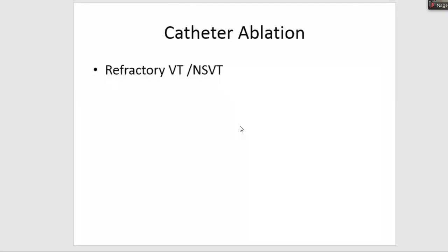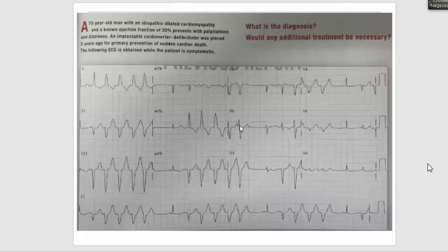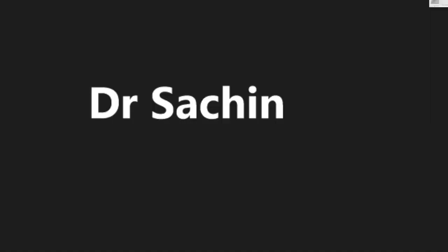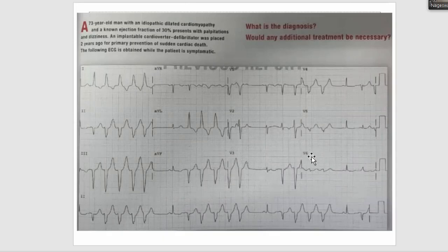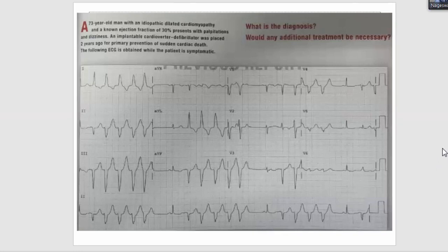During Q&A, a participant asked about classifying the VT as LBBB or RBBB type. V1 is negative — this is a left bundle branch block morphology VT, which typically arises from the right ventricle. However, its relatively narrow QRS suggests a septal origin. V1 is negative, V2 suddenly becomes positive then negative — this is the reverse pattern break, classical for the crux or adjacent septal region.